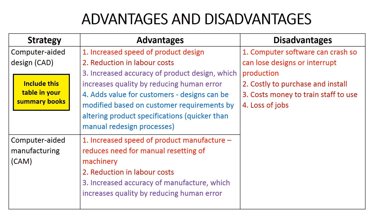Both CAD and CAM software improve accuracy. CAD improves the accuracy of product design, and CAM improves the accuracy of product manufacture, because the computer software reduces the risk of human error. Finally, an advantage of CAD software is that it adds value for customers, because it makes it much easier to modify designs based on customer requirements — the product specifications can simply be changed in the computer, which immediately translates these into a new product design.